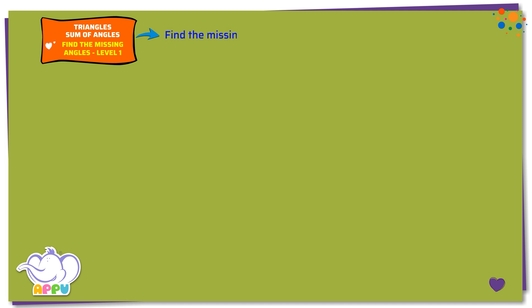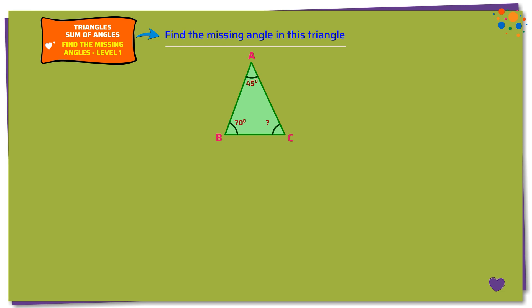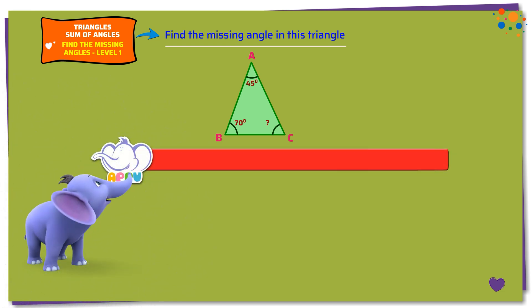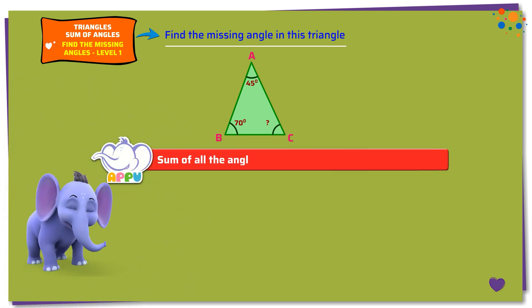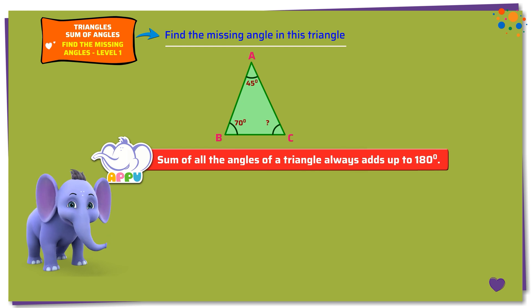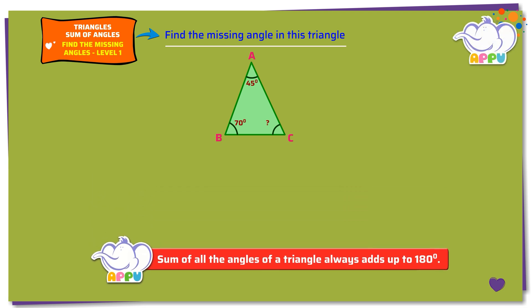Find the missing angles. Find the missing angle in this triangle. Sum of all the angles of a triangle always adds up to 180 degrees. In this triangle ABC, we see that angle A equals 45 degrees and angle B equals 70 degrees. We need to find angle C.